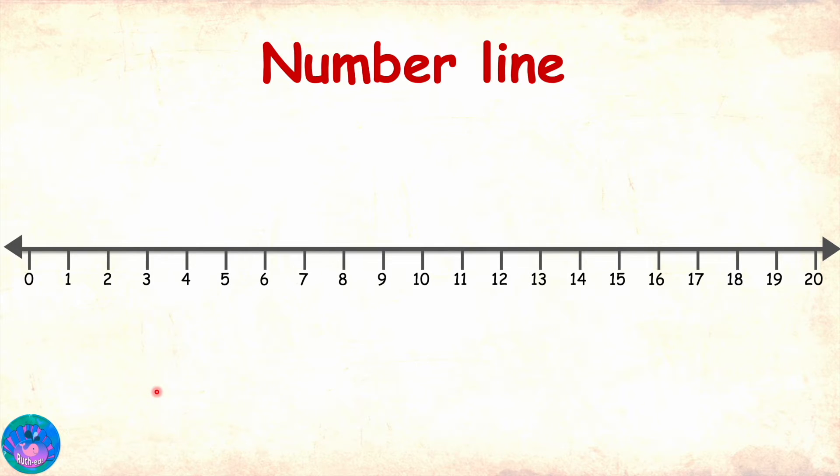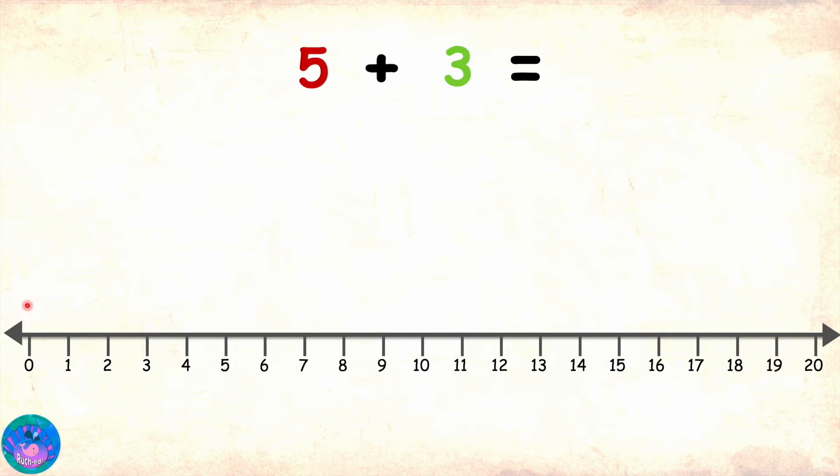For our addition, we will be using a number line starting from 0. Let us solve 5 plus 3 using the number line. The first step is to make a big jump from 0 to the first number. Our first number is 5. So, here is the big jump from 0 to 5.